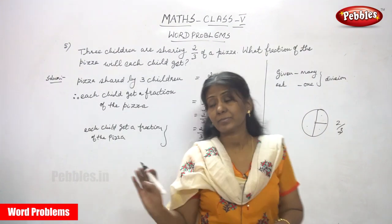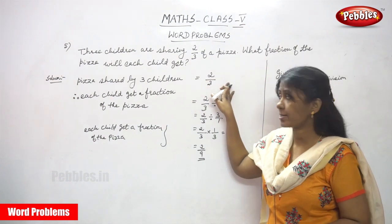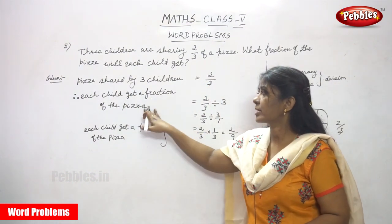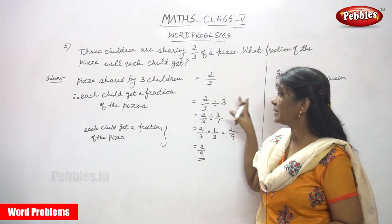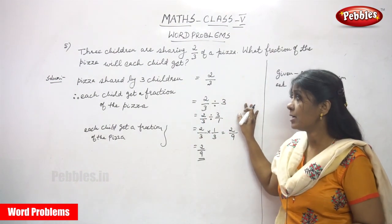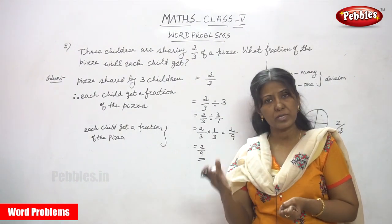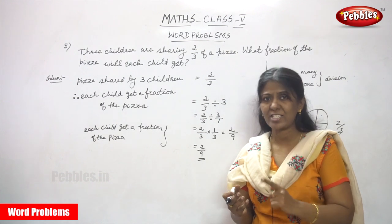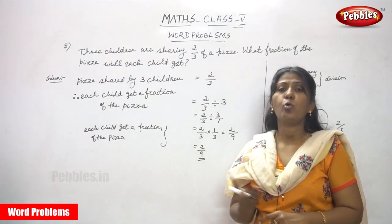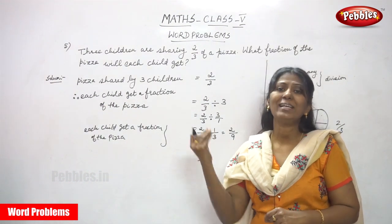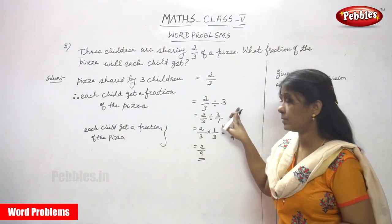This is the answer. So I will repeat once again. Pizza shared by three children is 2/3 fraction. Each child gets a fraction of the pizza — therefore each child gets 2/9. So 2/3 is divided by 3, because they given many children — three children — but they ask for only one single child, or each child. How much part of a fraction will each particular child get? That is the question.